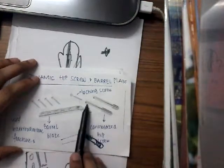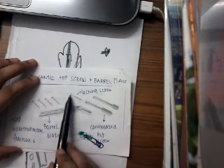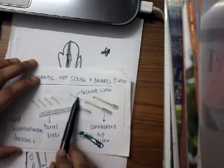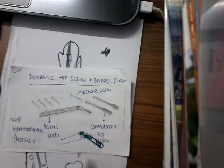It is called cannulated because there is a hollow space in between, and the locking screw goes into this hollow space.